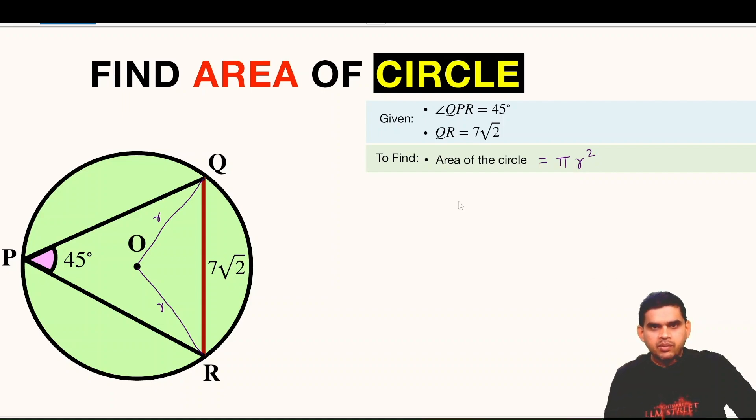So recall a property that if we have a circle and if we have a chord, this is the center. So angle made by this chord at any point on the circle, say for example this is the point. So if we see this angle formed, if this is theta, then the angle formed by the same chord at the center is double the theta, is two times the theta. So we will apply this property here in this triangle.